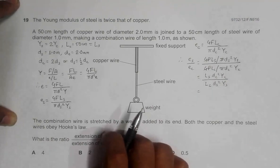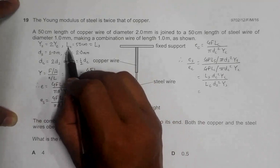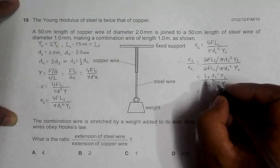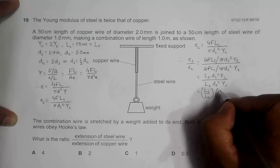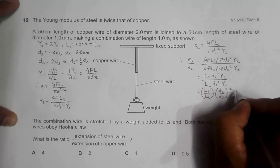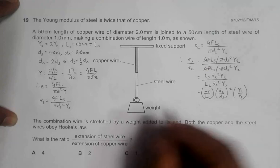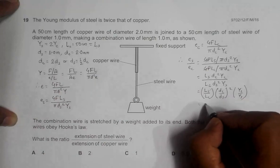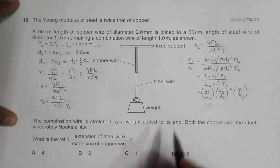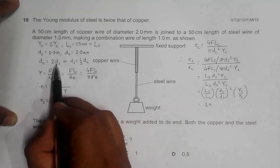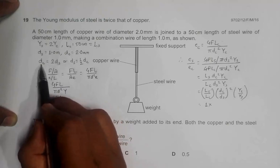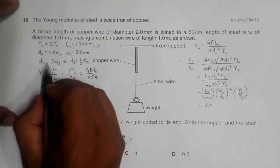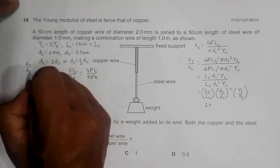Since LS and LC are equal, the ratio should be equal to LS by LC times DC by DS squared times YC by YS. Since LS and LC are equal, the ratio is 1. Now we have DC by DS, which from here should be equal to 2 is to 1.